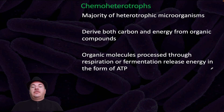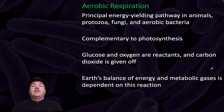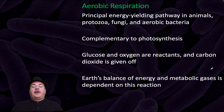Chemoheterotrophs make up the majority of heterotrophic microorganisms. They derive both carbon and energy from organic compounds. Organic molecules processed through respiration or fermentation release energy in the form of ATP. Aerobic cellular respiration is the principal energy-yielding pathway in animals, protozoa, fungi, and aerobic bacteria — this is complementary to photosynthesis, with glucose and oxygen as reactants and carbon dioxide given off. The Earth's balance of energy and metabolic gases is dependent upon this reaction. In a future set of video lectures, we'll go through the details of aerobic cellular respiration and fermentation.